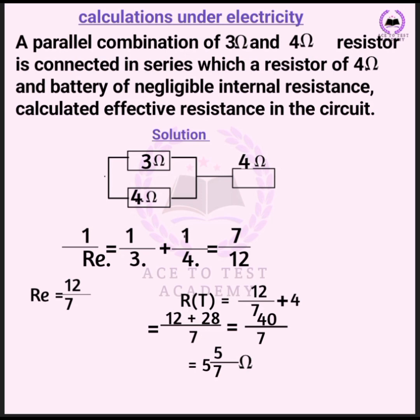To find the parallel combination of 3 ohms and 4 ohms: one over R_parallel = one over three plus one over four = four over twelve plus three over twelve = seven over twelve. So R_parallel = twelve over seven. Then adding the series resistor: total effective resistance = twelve over seven plus four.